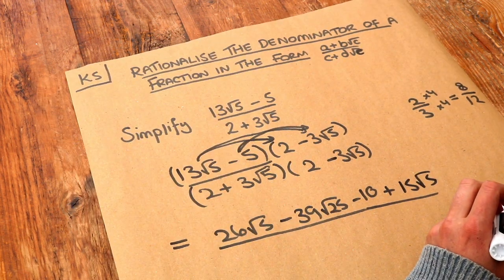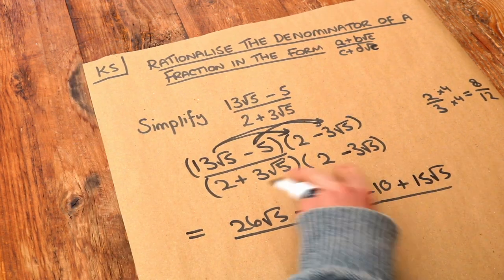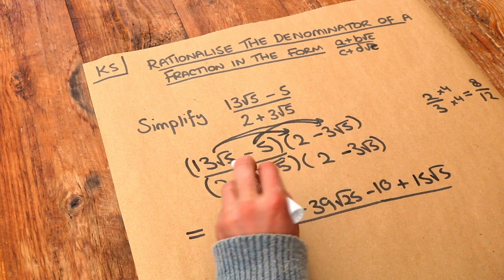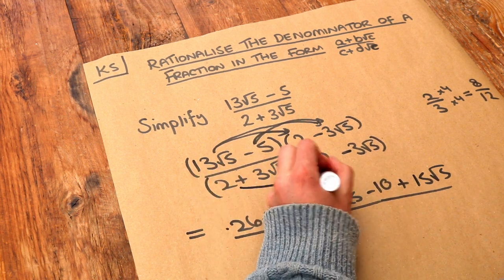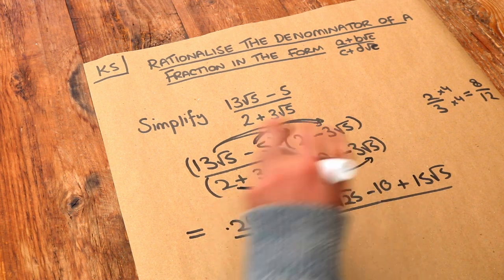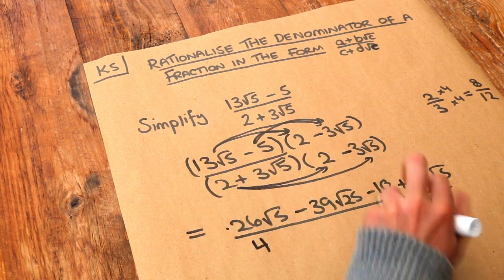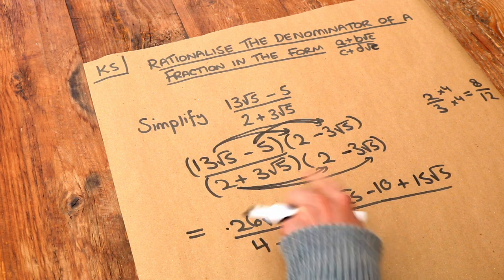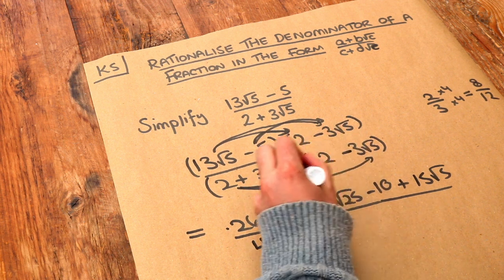So that's the numerator, which we'll simplify. And then we next deal with the denominator. So we do the first thing in the first bracket times each thing in the second. So 2 times 2 is 4, 2 times minus 3 root 5 is minus 6 root 5.